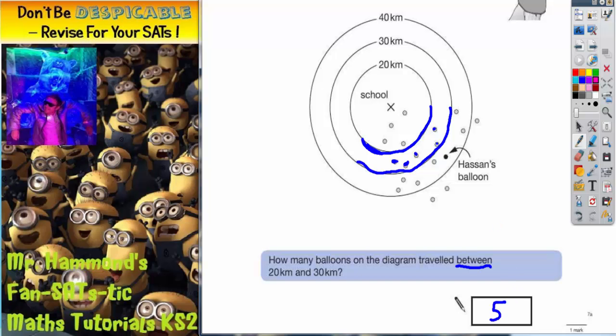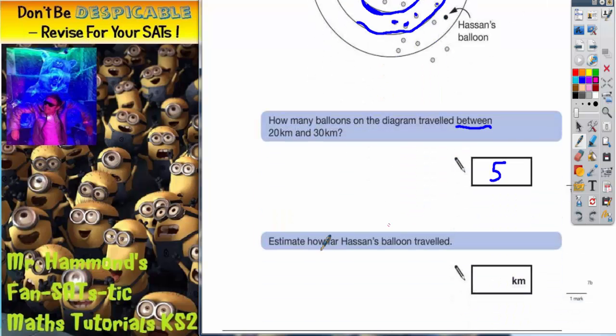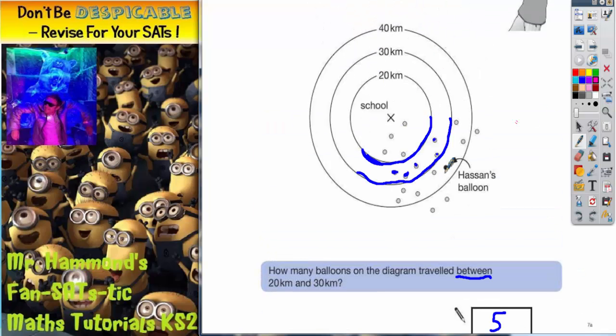Let's get a different color for the second question. It says, estimate how far Hassan's balloon travelled. Well, Hassan's balloon is this black dot here. And this line, we've already said, is 30 kilometres. And this line here, which is on the other side of Hassan's balloon,